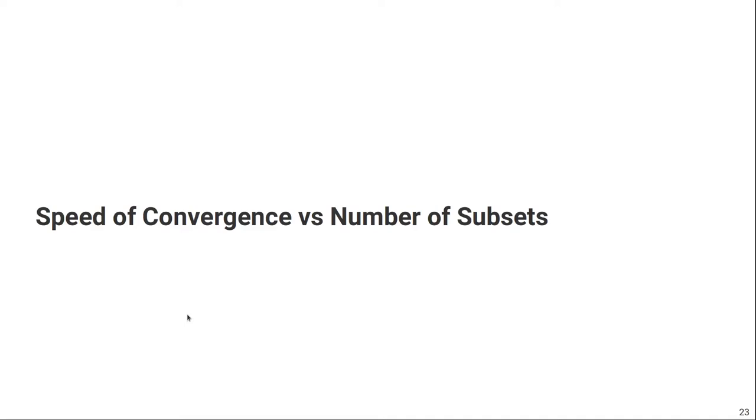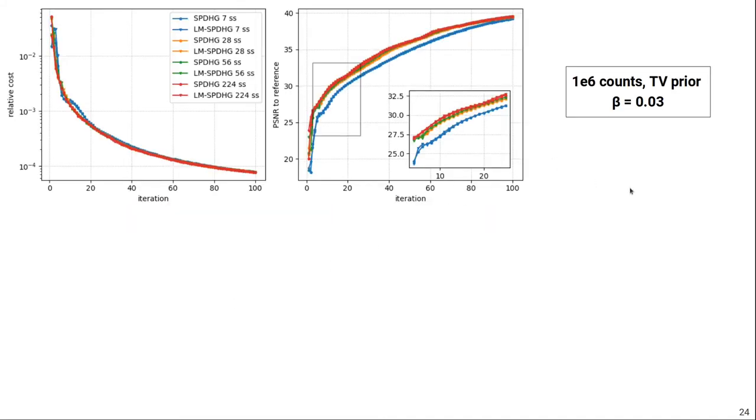Next, we also investigated the convergence as a function of the number of subsets, and we first did it for the total variation prior. Results are shown here in the top left. Different colors encode different numbers of subsets from 7 to 224. Results for the sinogram versions are shown with the circles and for the list-mode SPDHG with the triangles. So you can first of all see that actually if you look at the PSNR, there's no difference between the sinogram and list-mode version. And you can also see that using more subsets generally leads to faster convergence. But we can see that there's not a lot of difference between using 28, 56, and 224 subsets for total variation.